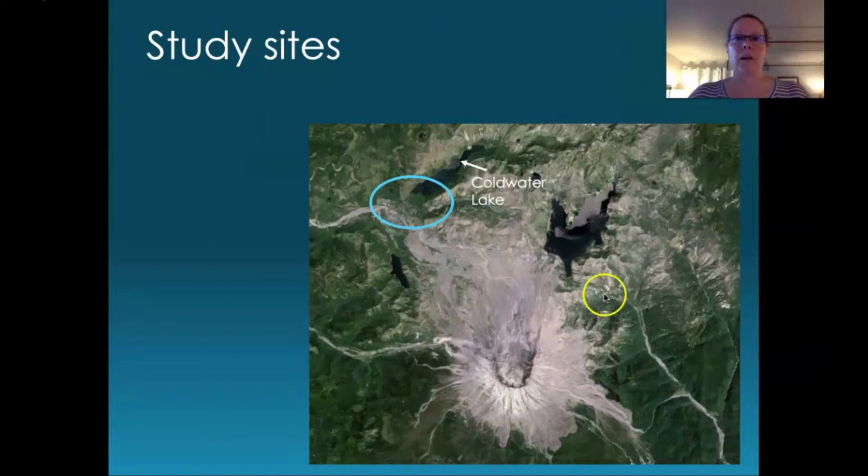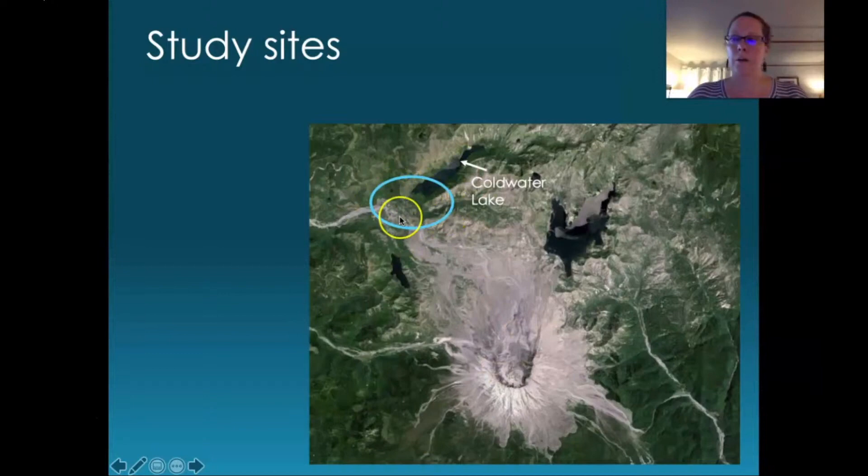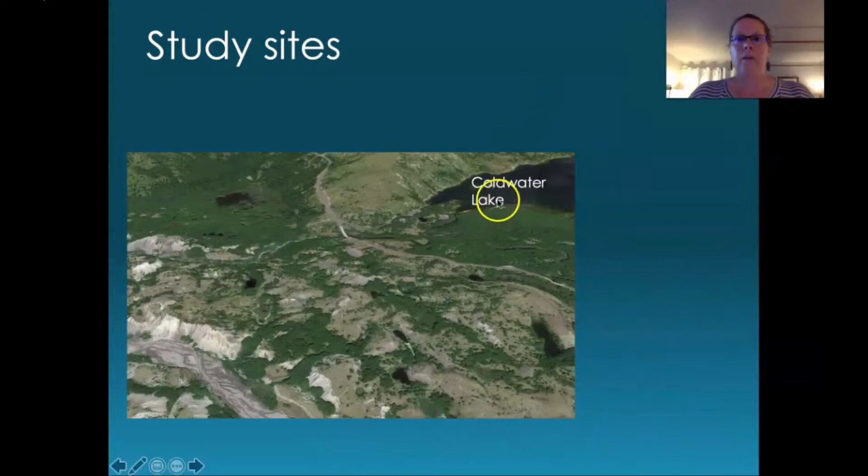I showed a map from shortly after the eruption, and this is a more recent one showing quite dramatic changes in the landscape. Here's the cone of Mount St. Helens, here's Coldwater Lake, and we're interested in this region that was part of the debris avalanche zone — south of Coldwater Lake.